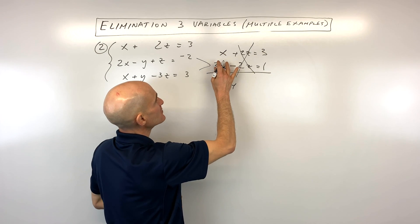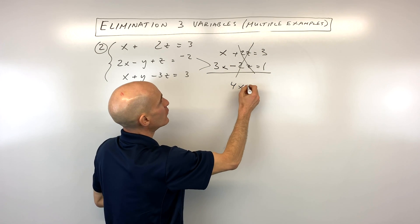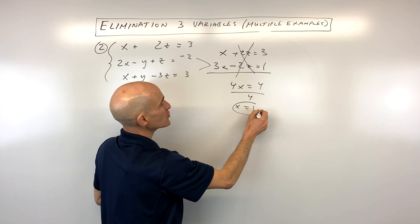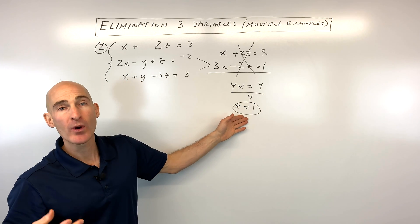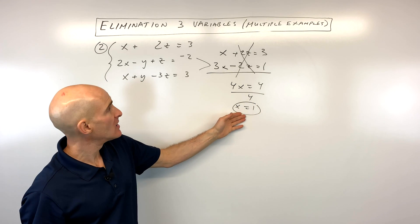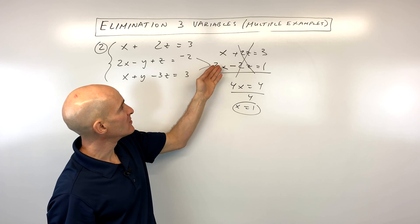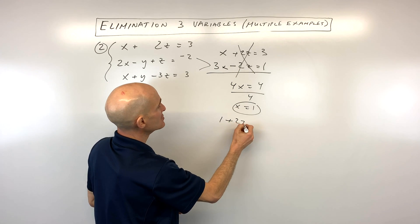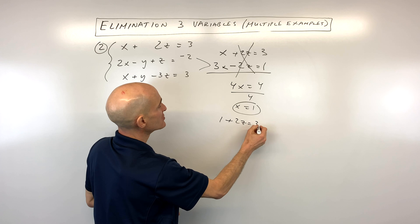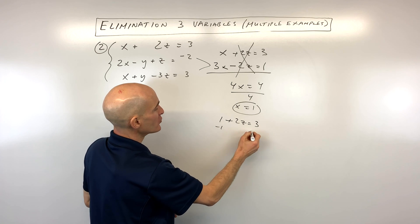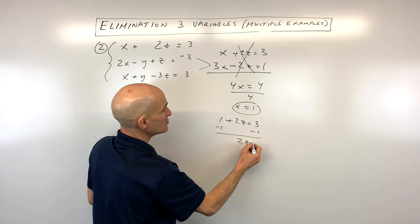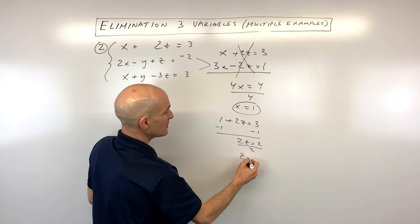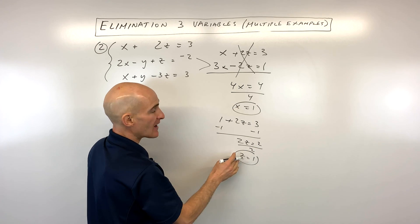Adding straight down: 1x plus 3x is 4x equals 4. Divide both sides by 4 and x equals 1. Now we work our way backwards — putting x equals 1 into the top two-variable equation: 1 plus 2z equals 3. Subtract 1 from both sides to get 2z equals 2. Divide both sides by 2 and z equals 1.